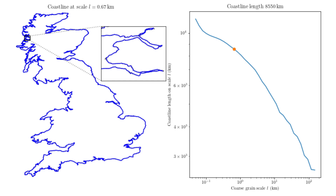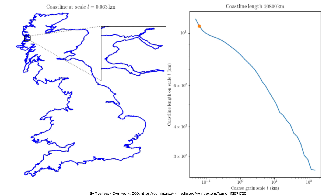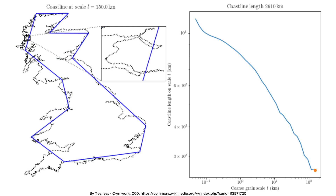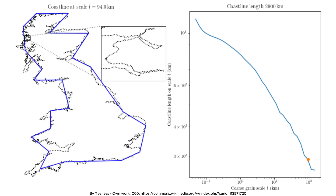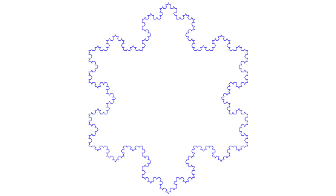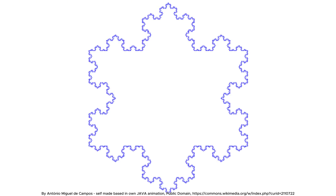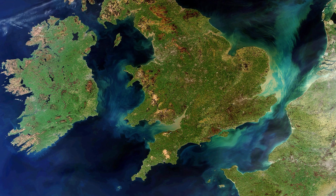This scale dependence occurs because coastlines exhibit self-similarity, a key feature of fractals, where smaller segments resemble larger ones at different scales.